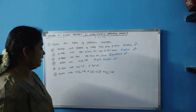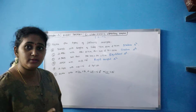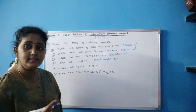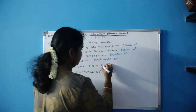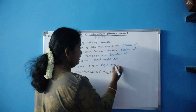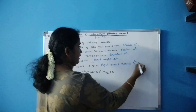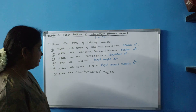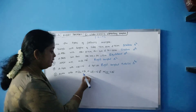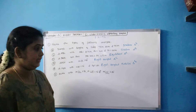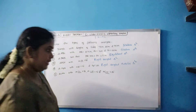Triangle XYZ with angle Y = 90 degrees and XY = YZ. Two sides are equal, so that means it is an isosceles triangle. And also one angle is 90 degrees, so we can say it is a right angle isosceles triangle. Triangle LMN with angle L = 30 degrees, angle M = 70 degrees, angle N = 80 degrees — all three angles are less than 90 degrees, so it is an acute angle triangle.